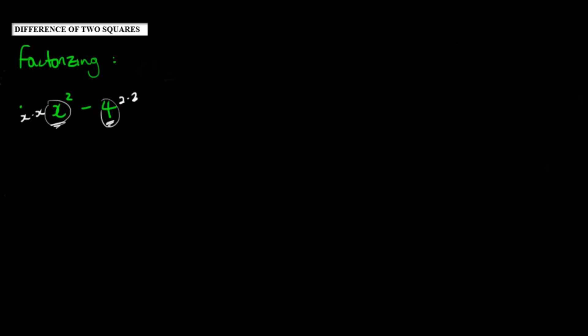So because they are squares, if we were to think about it visually, it means that I basically have two squares that I'm subtracting from each other.